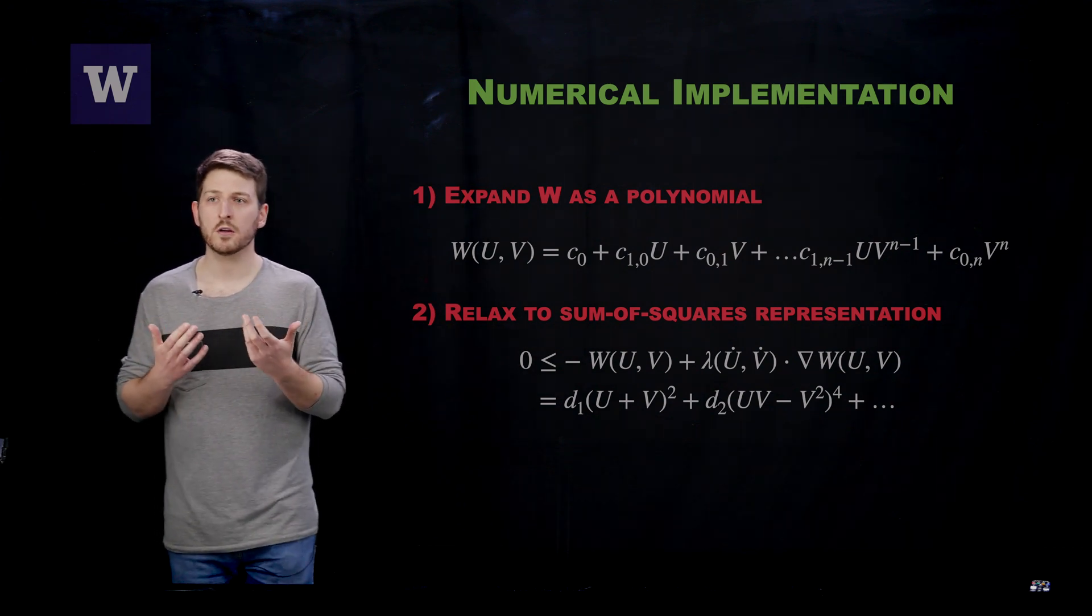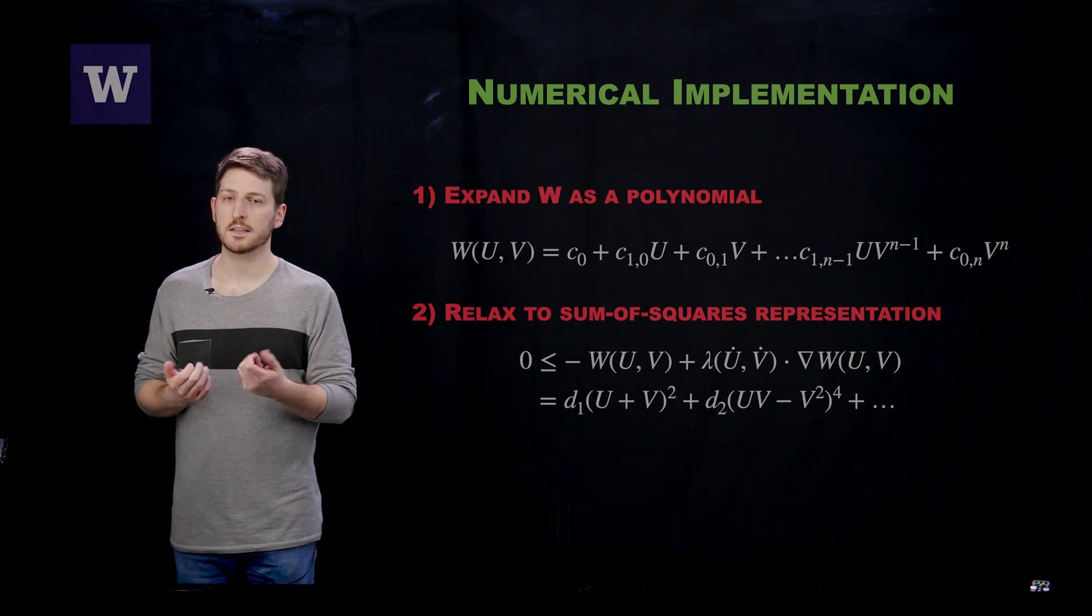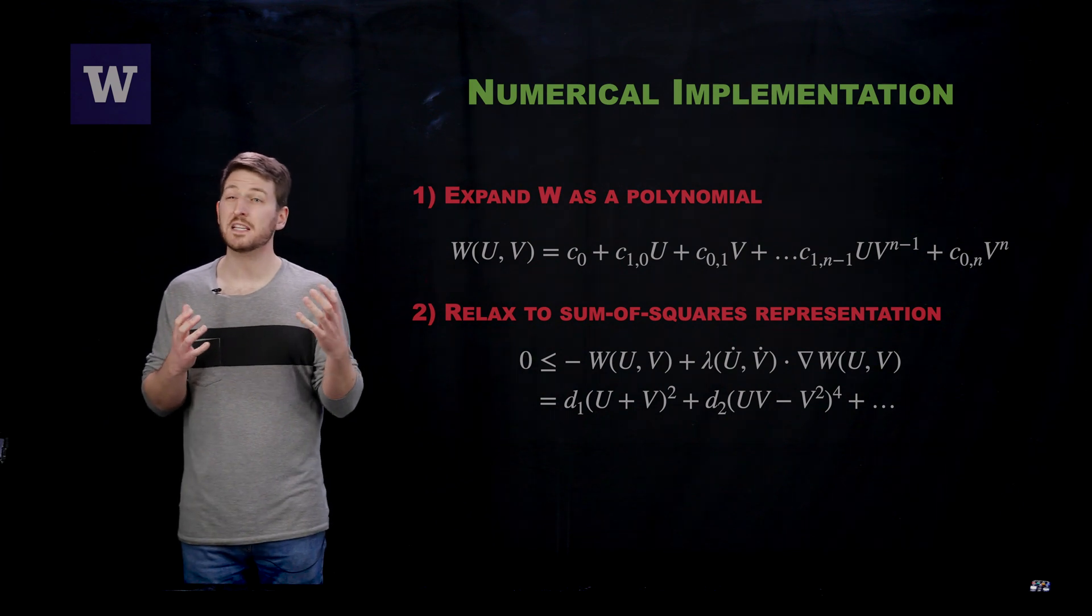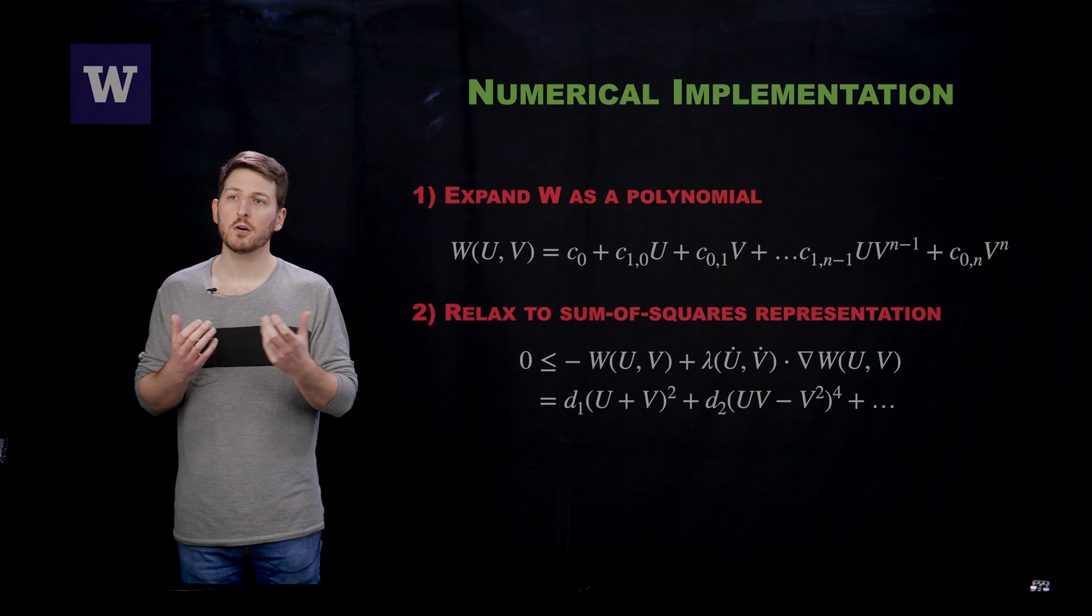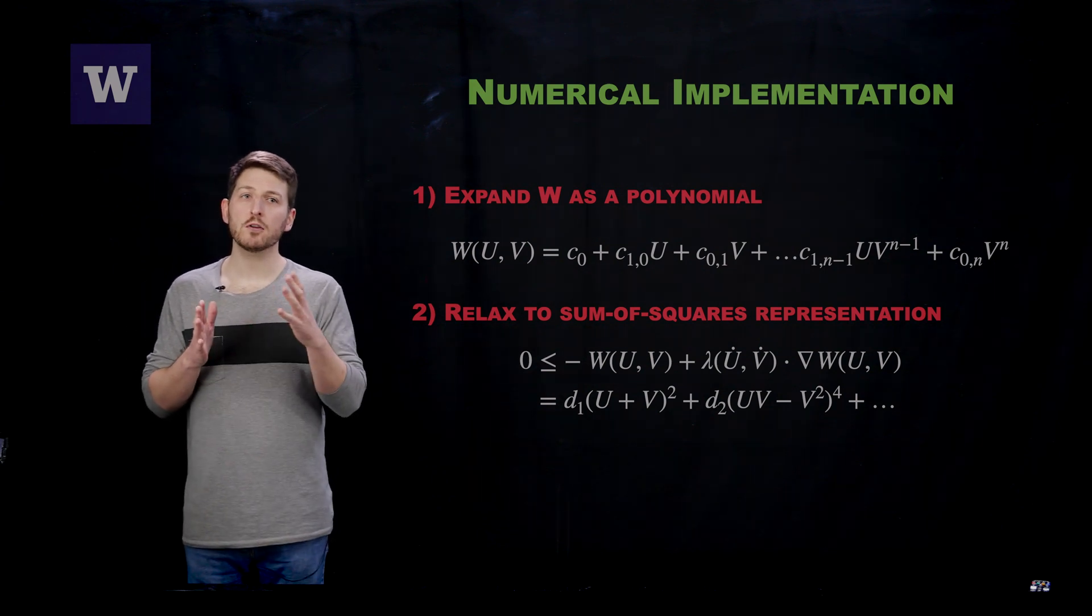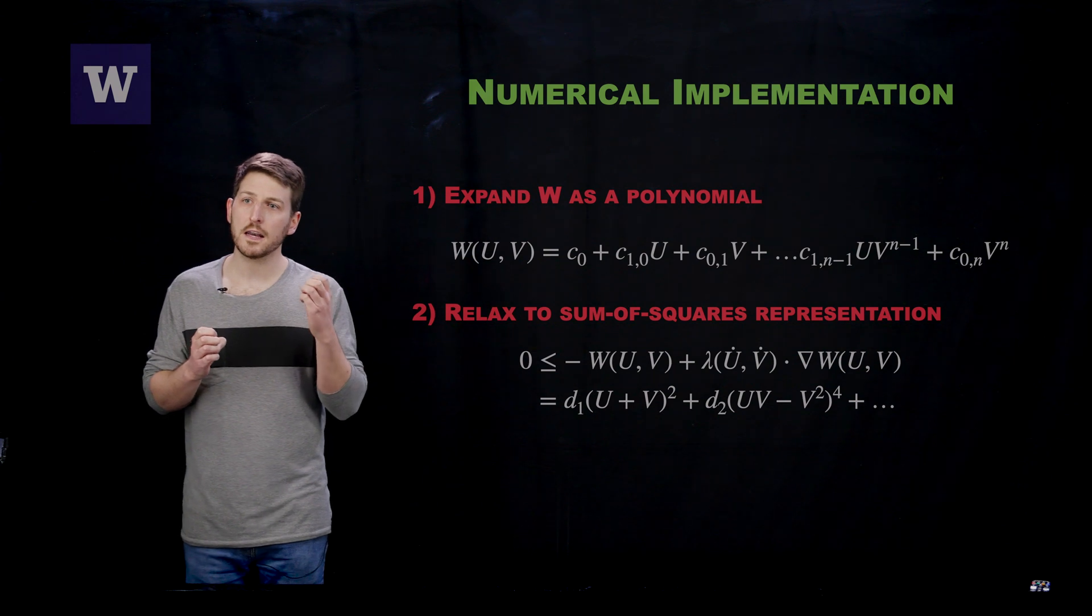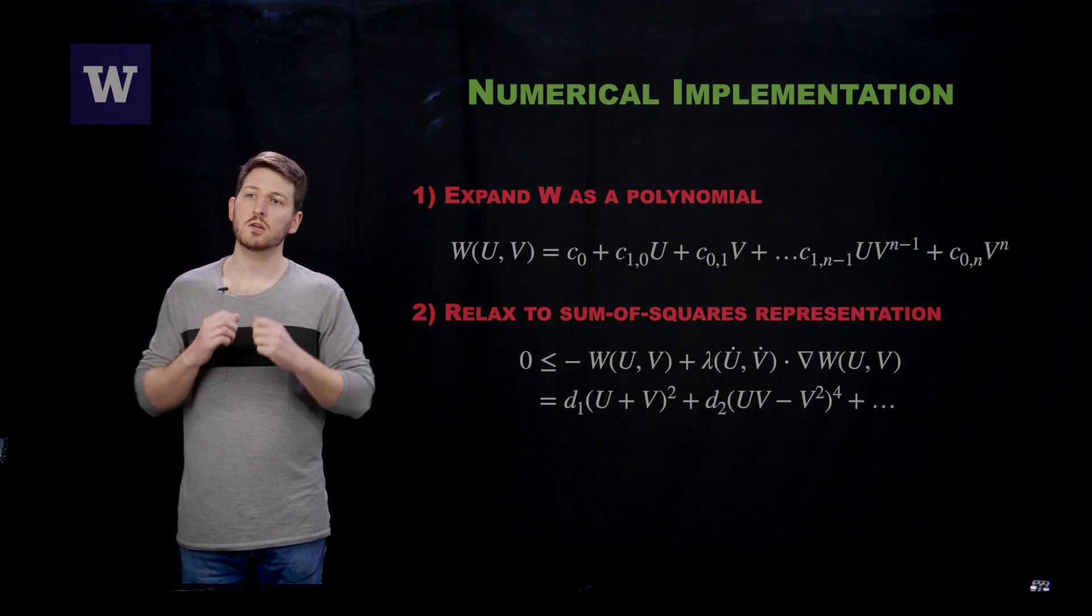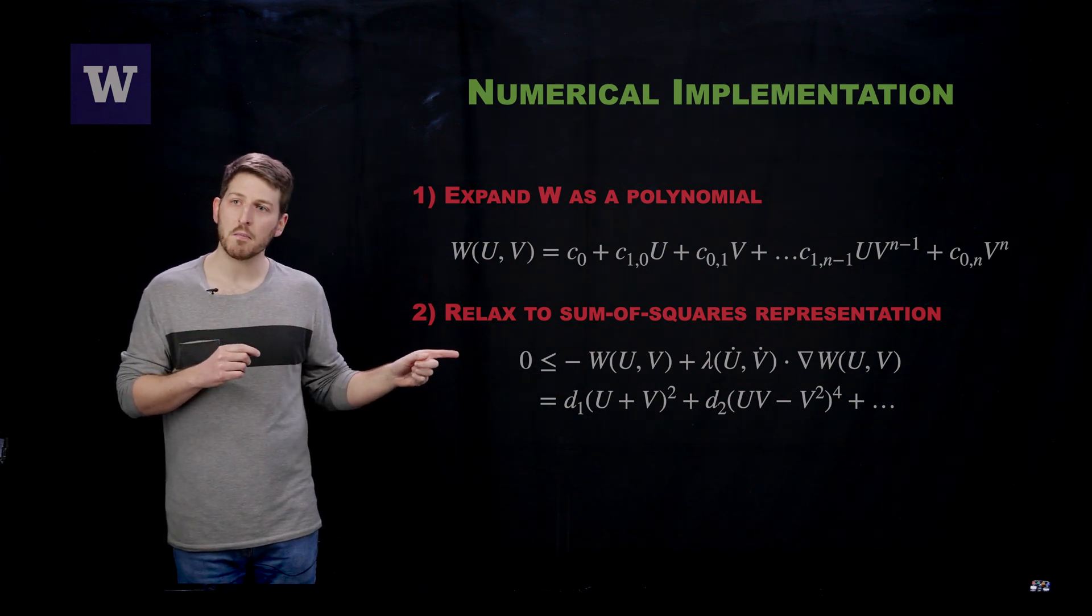Unfortunately, as the degree of the polynomial increases, this becomes an NP-hard problem. Therefore, we propose to introduce a further relaxation of this problem. We seek not to find a non-negative polynomial, but we seek to tune the coefficients in such a way that this inequality can be represented as a sum of squares.